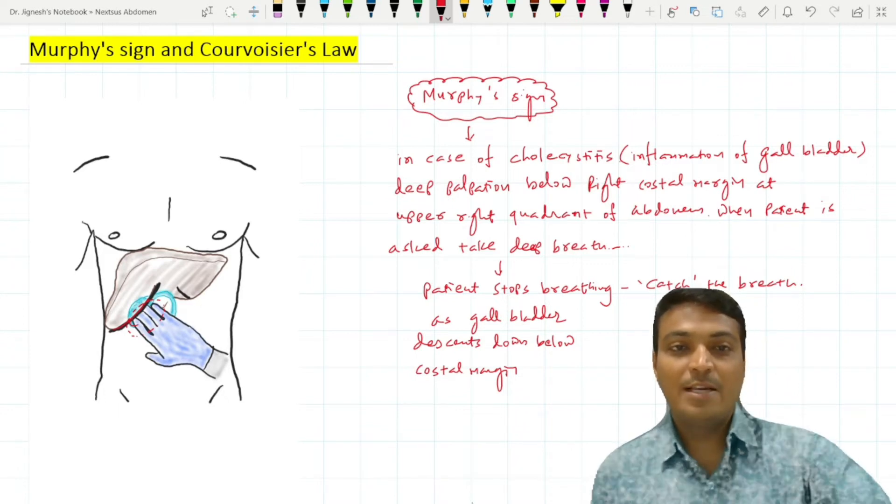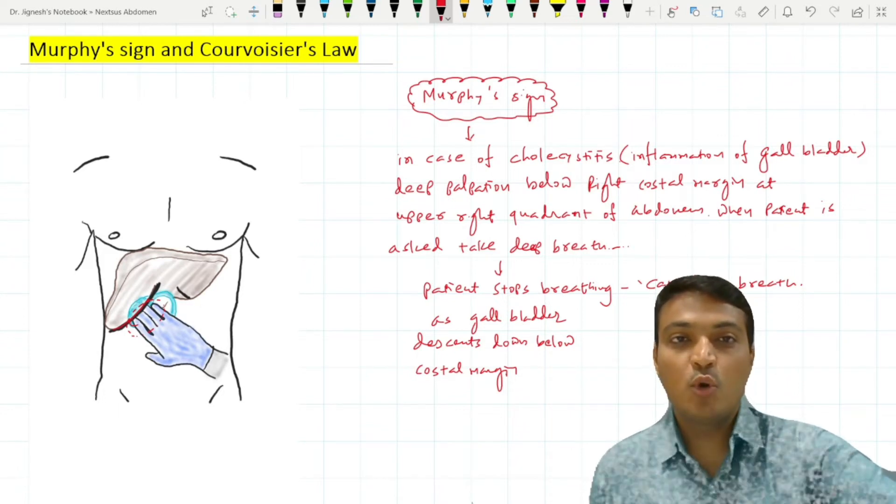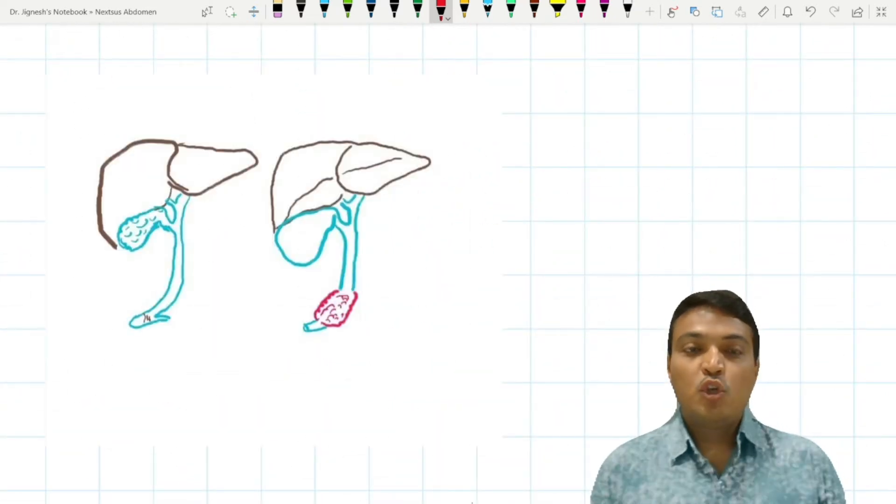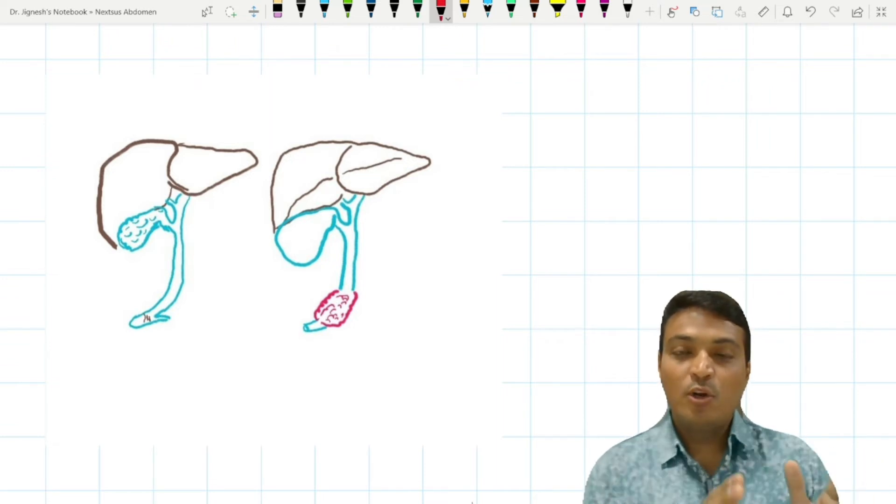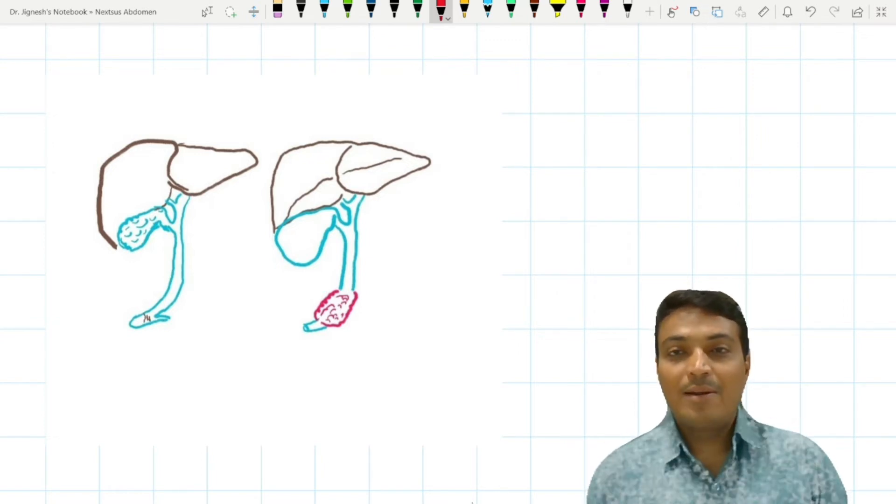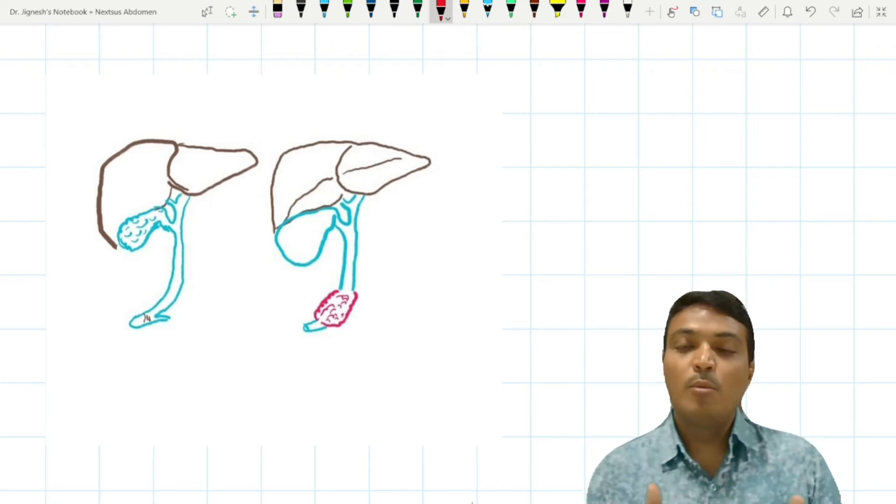Now along with this Murphy's sign, one more law is there, that is Courvoisier's Law. This Courvoisier's Law states that when a gallstone is present inside the gallbladder, that will lead to fibrosis of the gallbladder. And because of the fibrosis, the gallbladder is not palpable under the right costal margin and it is also painless.